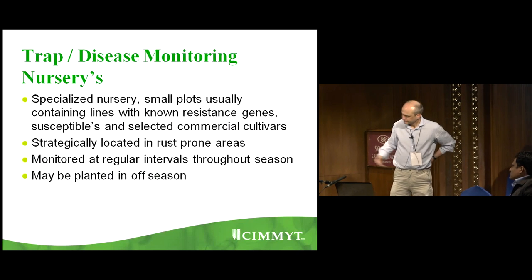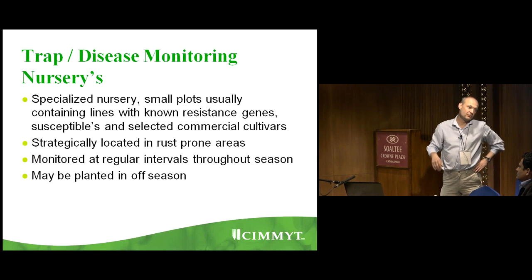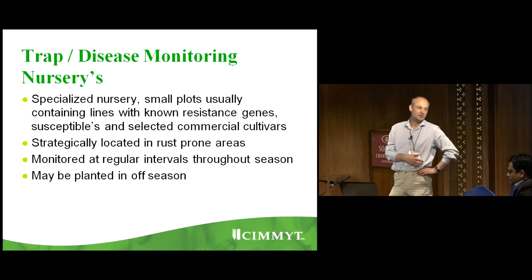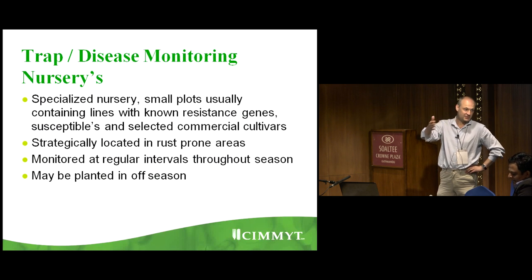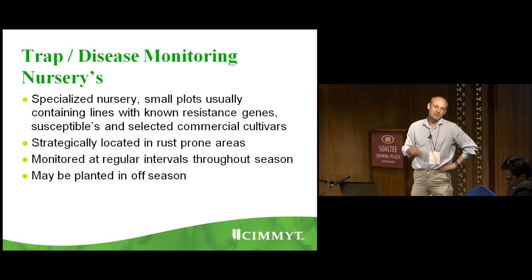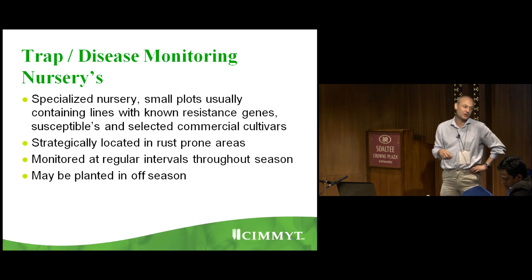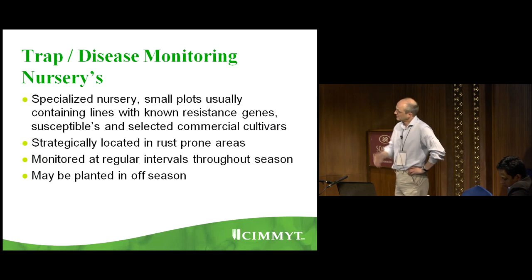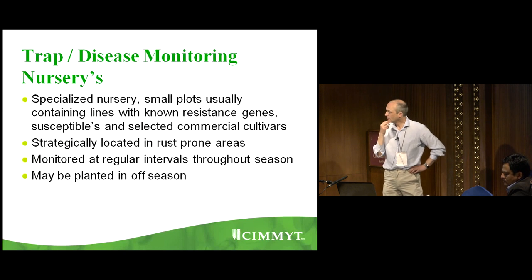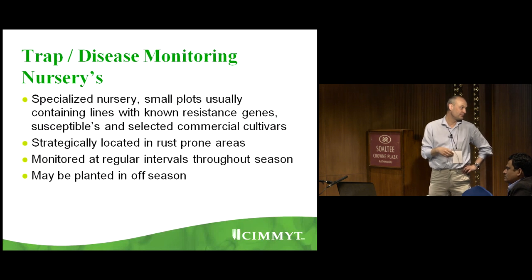As we saw in the field yesterday, trap disease monitoring nurseries are specialized nurseries — small plots with lines with known resistance genes, usually including commercial cultivars as well. For example, the SARK trap nursery includes cultivars from each of the countries. These are usually located in rust-prone areas where you would expect to see natural disease occurrence, monitored at regular intervals through the season. They can also be put in during the off season — many people are interested in what rust is floating around in the off season.